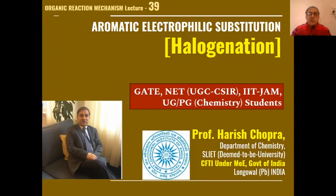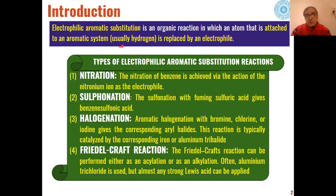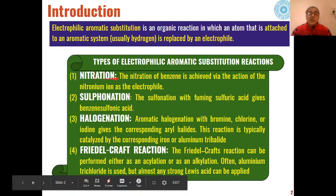In this 39th lecture on organic reaction mechanism, we continue with aromatic electrophilic substitution. This lecture will discuss the applications and mechanism of halogenation. Electrophilic aromatic substitution is an organic reaction where one atom from the aromatic system — usually hydrogen — is substituted by an electrophile. EAS reactions can be categorized into four types: nitration, sulfonation, halogenation, and Friedel-Crafts reactions. Nitration and sulfonation have already been discussed.